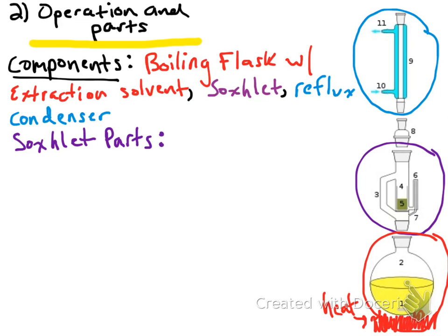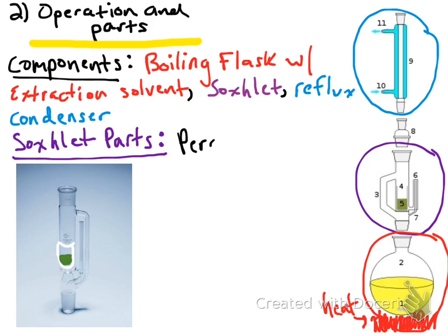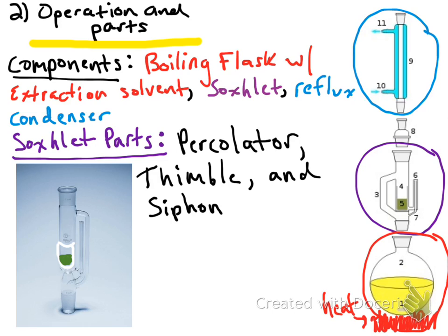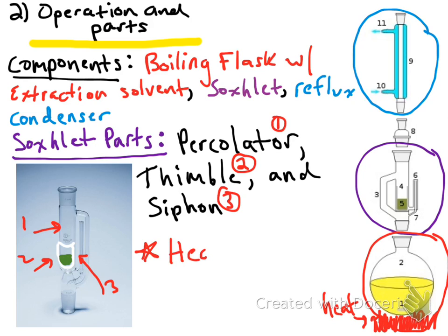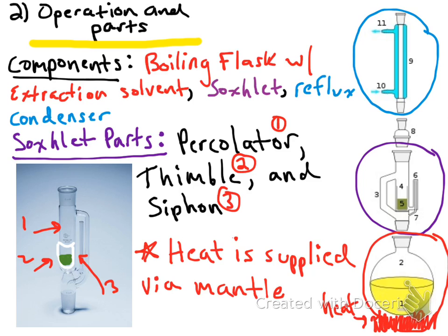The Soxhlet body itself has three main parts: a percolator, the thimble where you place your sample, and a siphon — aptly labeled in the diagram. The green in the image represents the biological sample. Heat is supplied via a heating mantle on the bottom of the boiling flask to ensure continuous evaporation.